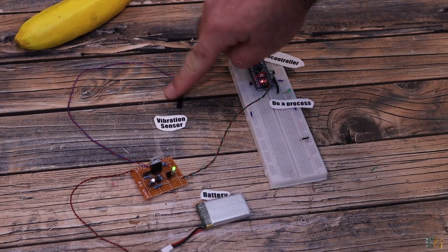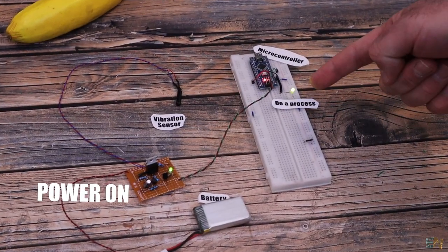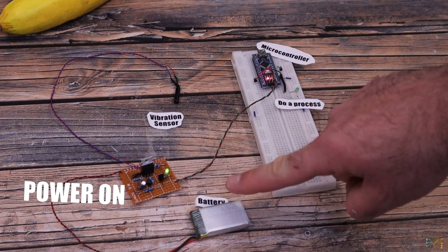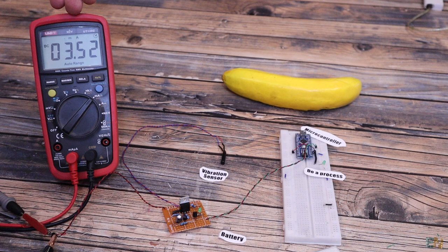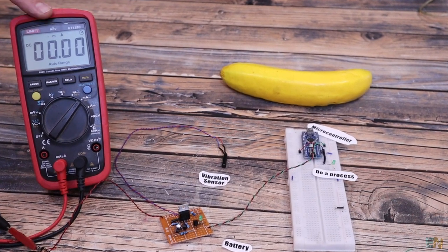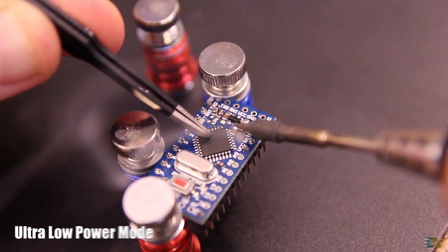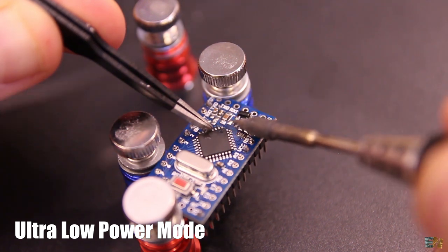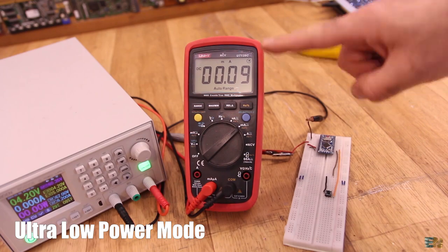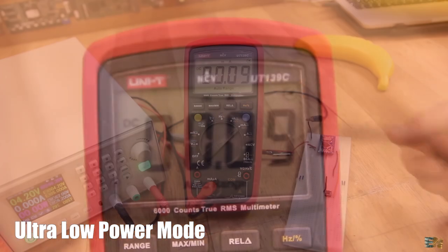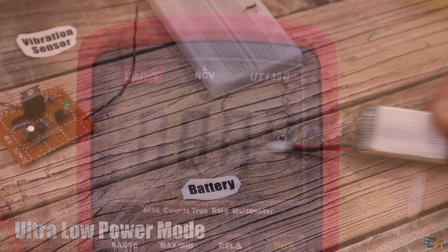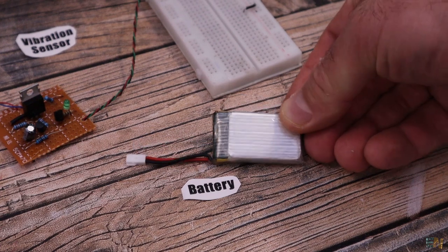I want to power on my microcontroller for a short time, do a process, and then go back to sleep where it consumes 0A of current. I've done something like that with the ultra-low power mode a few months ago on a different project, but even in that mode it was still consuming around 90 microamps. If I were to use a battery, after a year or so, the battery would get empty.